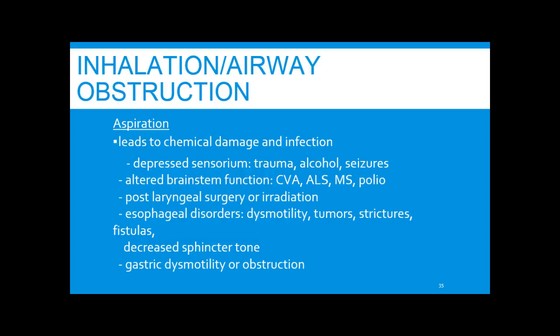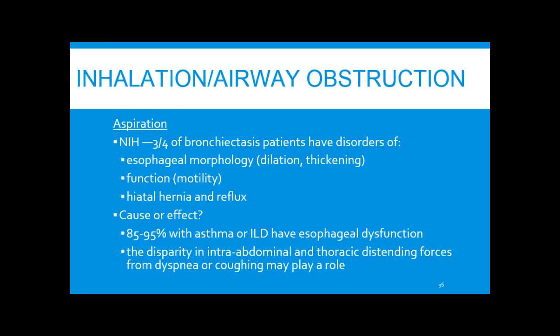Primary esophageal disorders have also been associated with bronchiectasis, including dysmotility, tumors, strictures, decreased sphincter tone, and gastric dysmotility. In the same registry, three-quarters of patients with bronchiectasis were found to also have disorders of esophageal morphology — dilation, thickening, disorders of function and motility, and hiatal hernia. Whether this is cause or effect remains unclear; 85 to 95% of patients with asthma or ILD also have esophageal dysfunction.